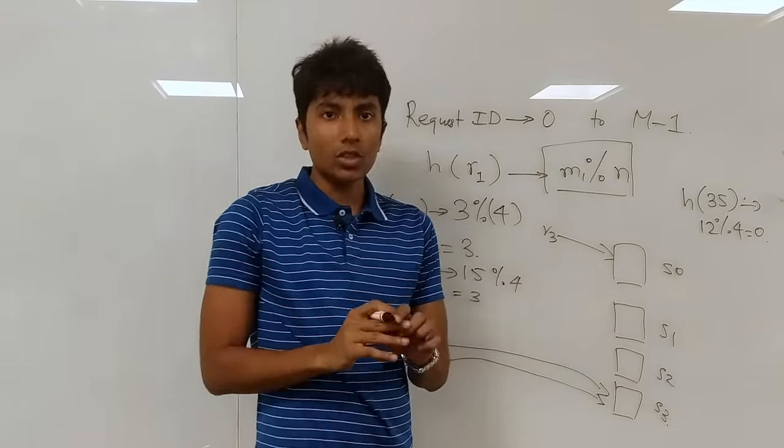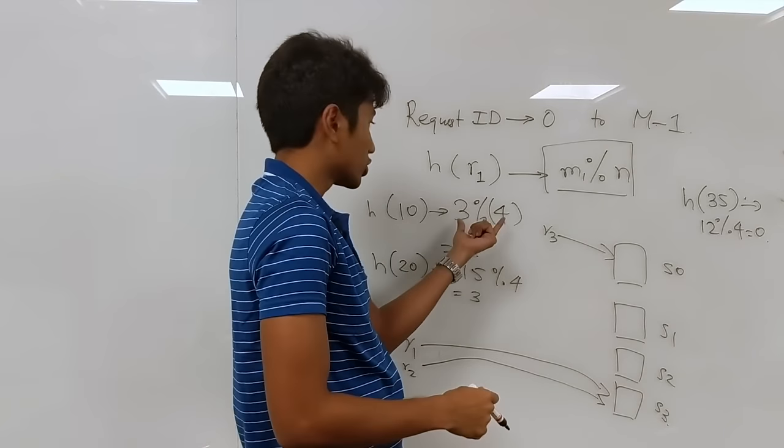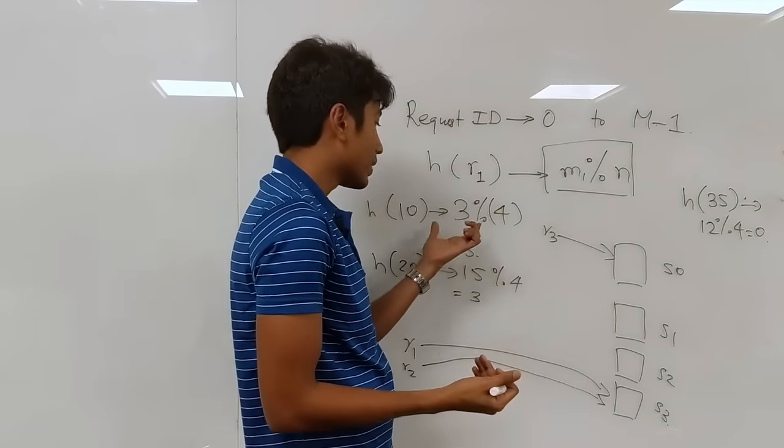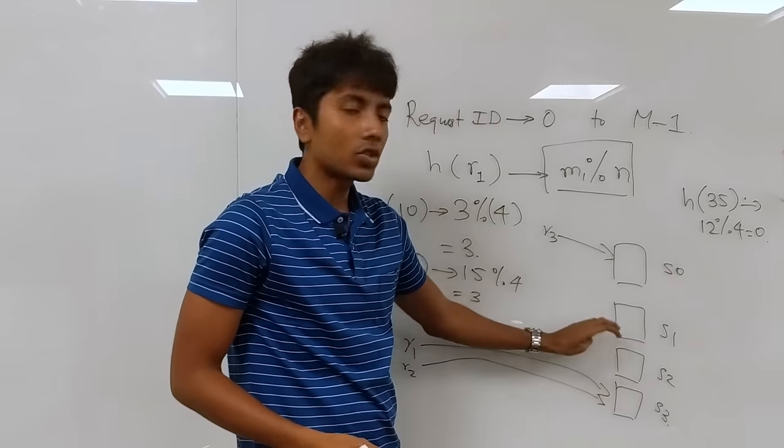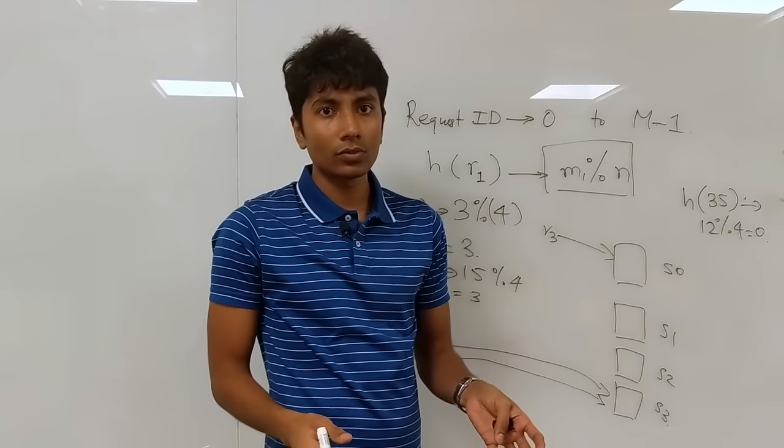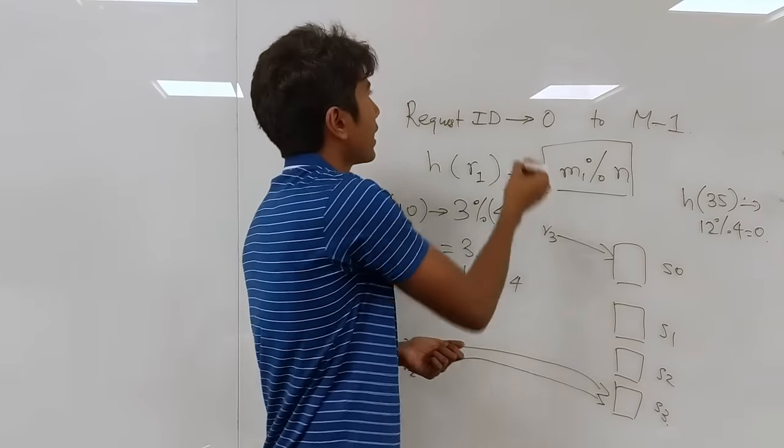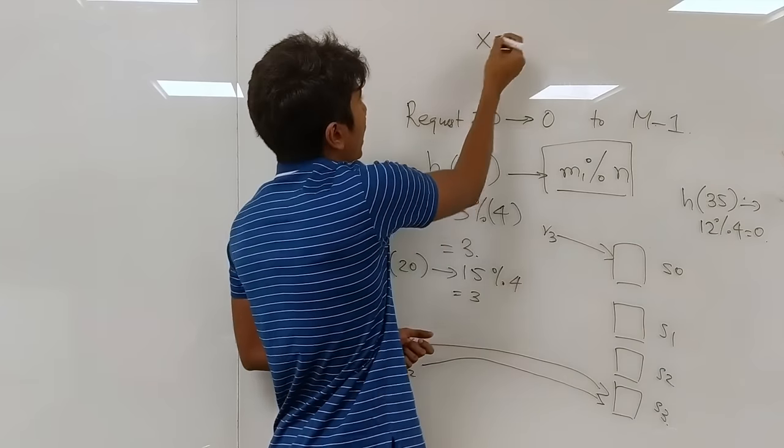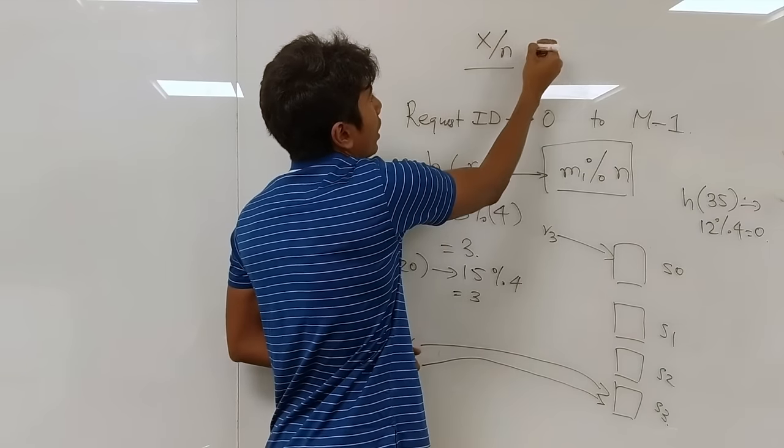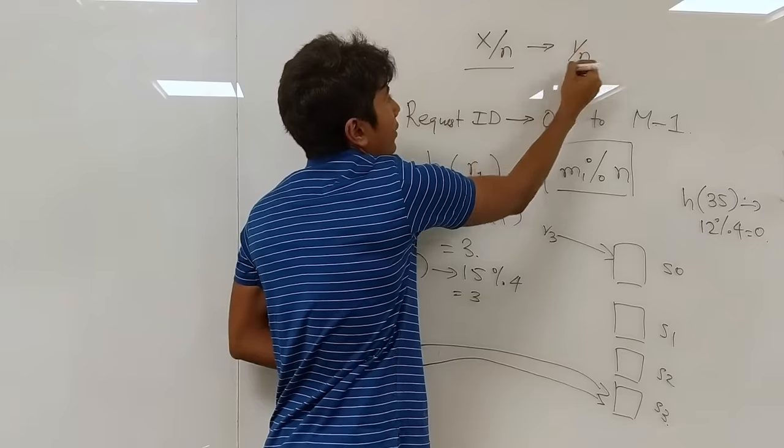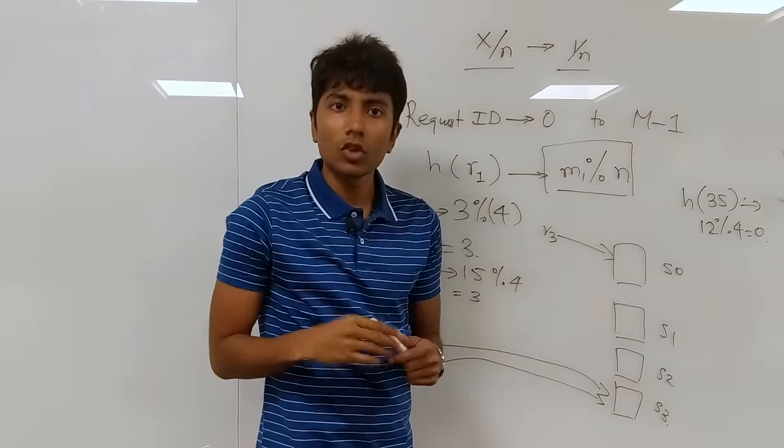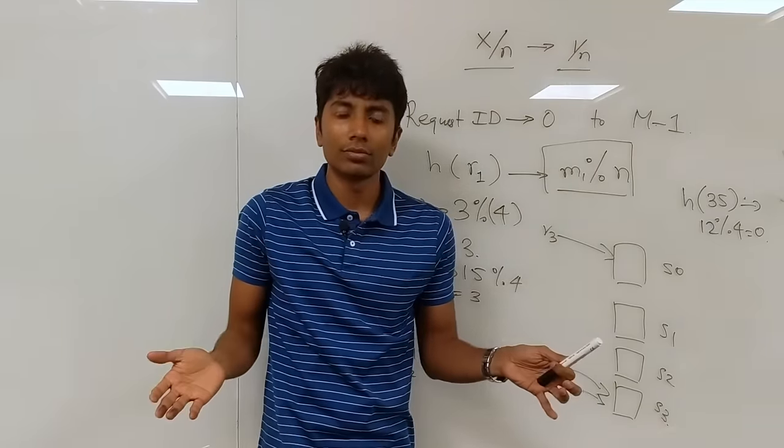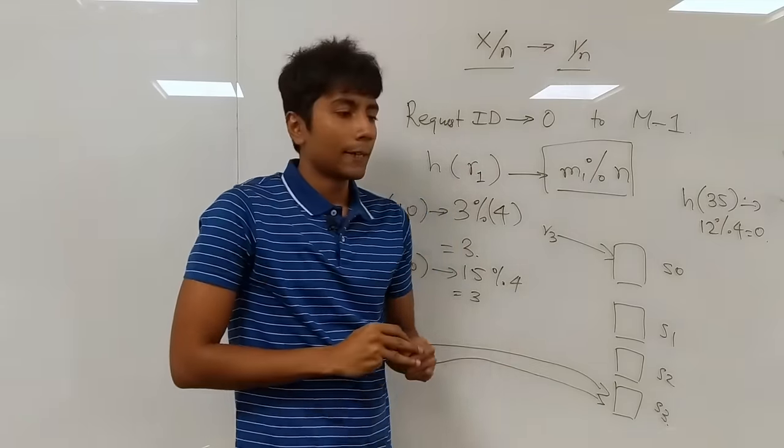Right? And in general, because this is uniformly random, and your hash function is uniformly random, you can expect all of the servers to have uniform load. So each of the servers, if there are X requests, will have X by N load. And the load factor is 1 by N. So everything is perfect, and that's all we need to do.